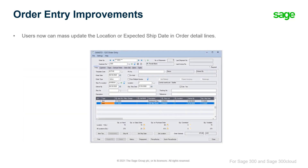Through the order entry improvements, users can now set the expected ship date and location for all details on an order. More information on this new feature is available in the order entry improvements in Sage 300 2022.0 video.